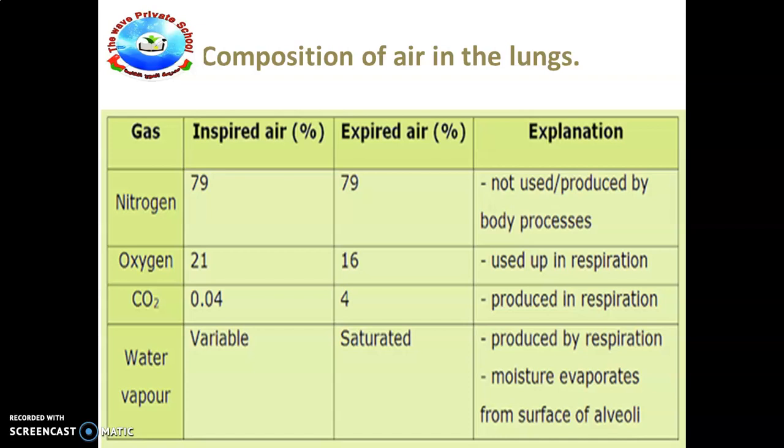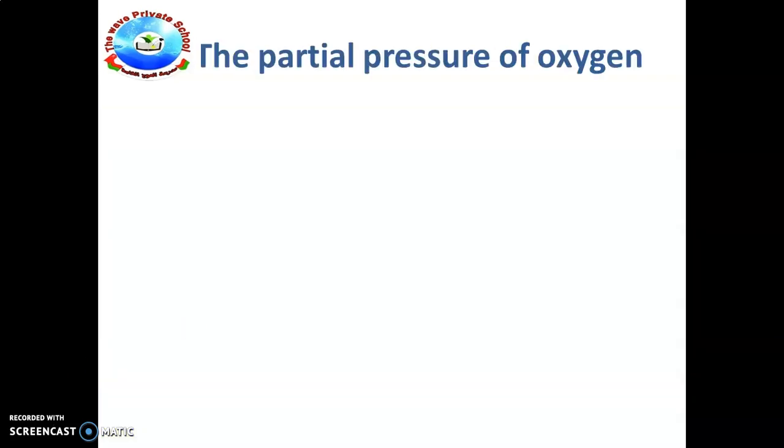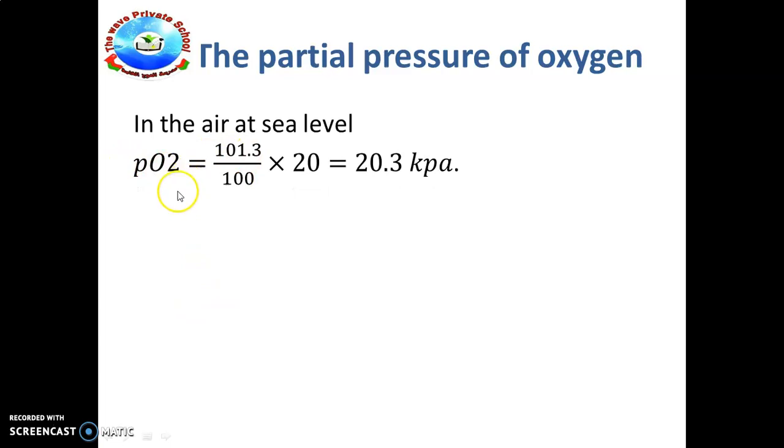The partial pressure of oxygen will be written as PO2. In the air at sea level, you can see the partial pressure of oxygen is written like this: PO2 = 101.3 divided by 100 and multiplied with 20. This 101.3 is the atmospheric pressure of oxygen in kilopascals. We're taking 20% of oxygen from the air when we inspire, that means inspiration. The total will be 20.3 kilopascals.